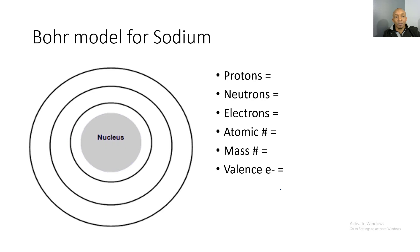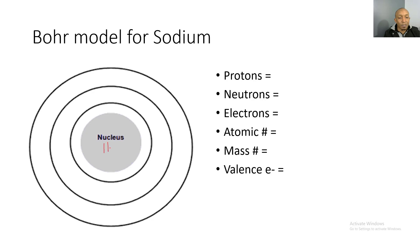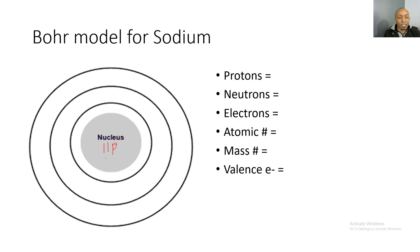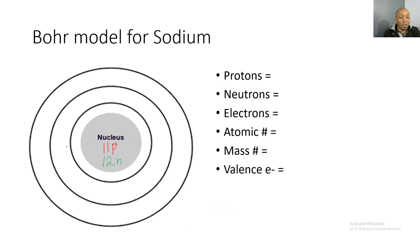Now let's look at another element — sodium. If we look at sodium on our periodic table, sodium has 11 protons in the nucleus. Its mass number is 23, which tells us it has 12 neutrons in the nucleus, because 11 protons plus 12 neutrons gives us 23. Since we have 11 protons, we're also going to have 11 electrons.